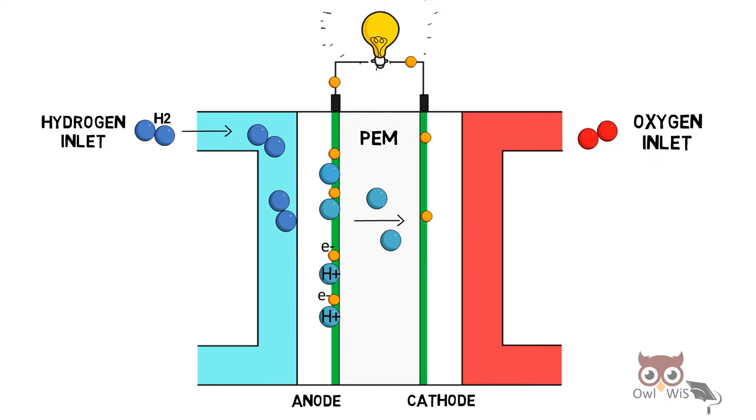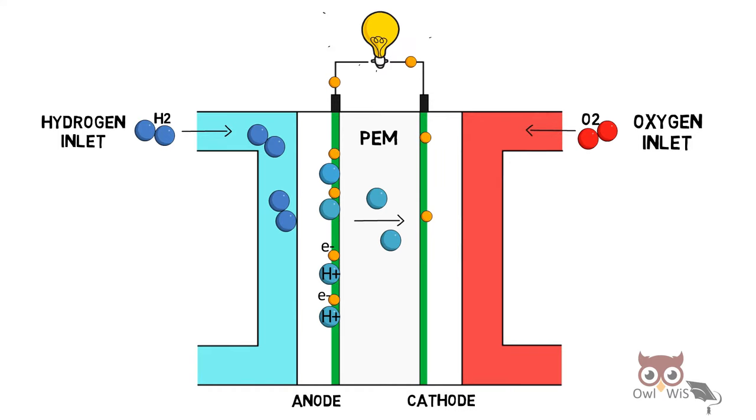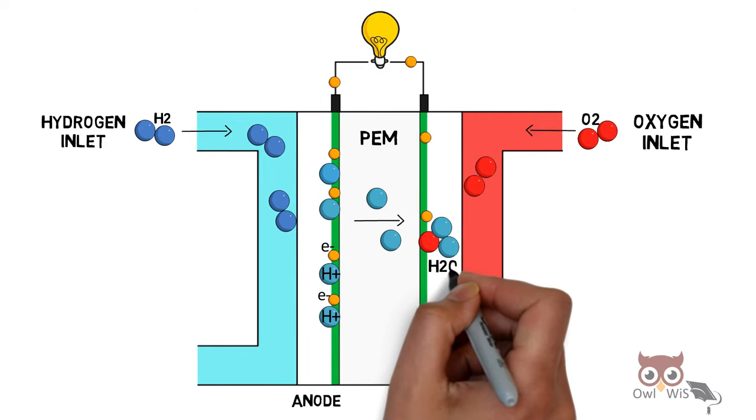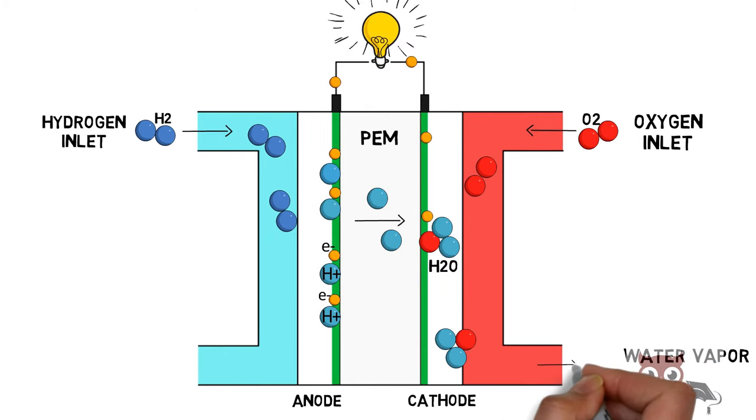From the oxygen inlet, the oxygen enters the cathode and then that also crosses the gas diffusion layer. Then, it combines with the hydrogen protons in the presence of electrons to form H2O, water. This water then moves out as a bi-product in the form of water vapor due to heat.